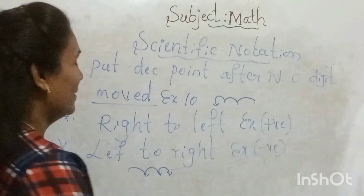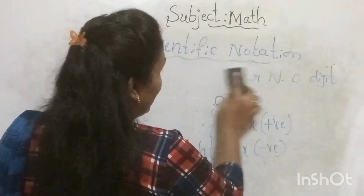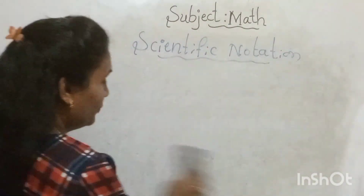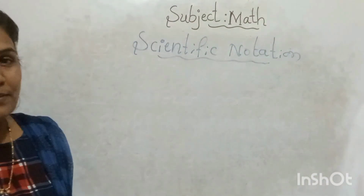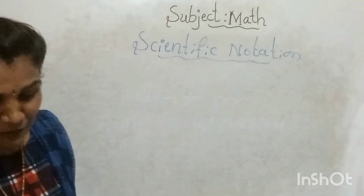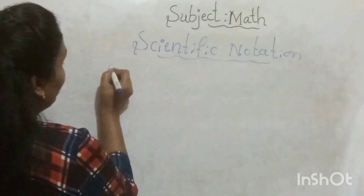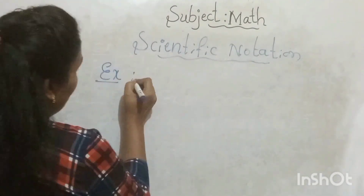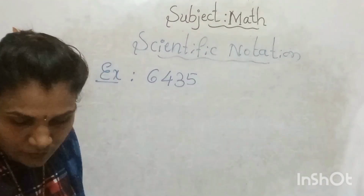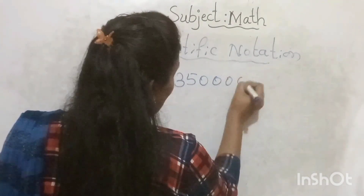Let me take an example. Express in scientific notation: 64,350,000 — that is 6 crore 43 lakh 50 thousand, written as 64350000 in our Indian system.